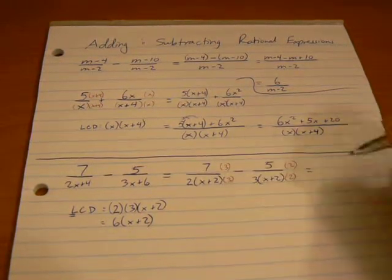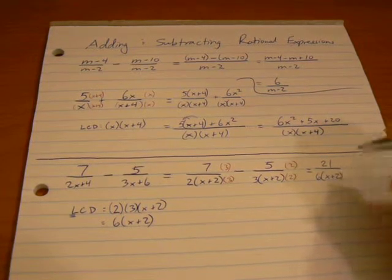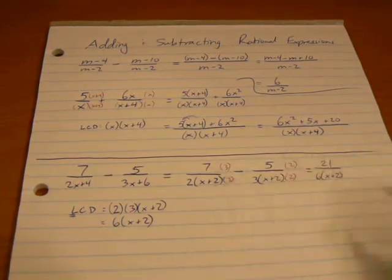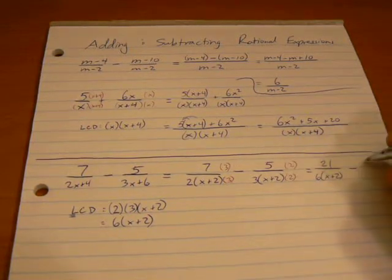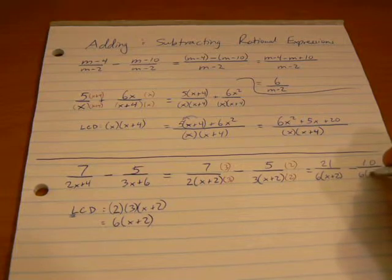So, now we're going to multiply this out. 7 times 3 gives us 21 over 6 times x plus 2, multiplying the 2 and the 3 there, leaving that factor the same. And 5 times 2 gives us 10. 3 times 2 is 6, x plus 2.